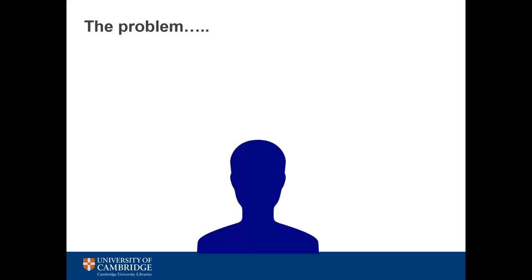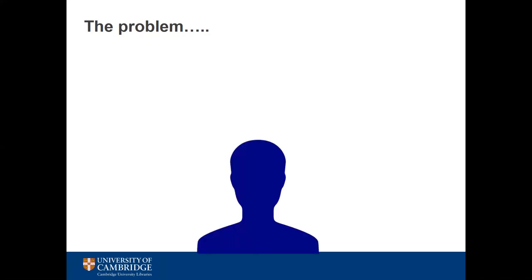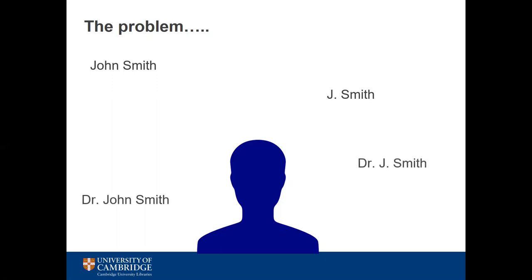Let's look at the example of John Smith. He gets a head start and begins authoring publications before he gains his PhD. Each publisher asks for slightly different forms of information during the submission process, so on some he is listed as John Smith and on others as Jay Smith. Once he has gained his PhD he continues to publish and naturally wants to include his new title, so there are now articles by Dr John Smith and Dr Jay Smith. John soon finds that he keeps getting confused with a researcher in a different field, so decides to include his middle initial on future publications.